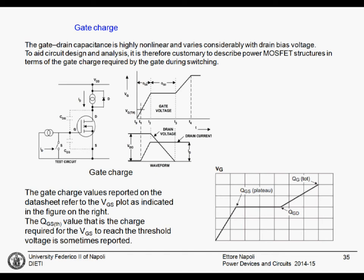This means that a significant portion of the power dissipation is the power needed to charge and discharge the input capacitances. From digital electronics, you know that charging and discharging the input capacitance of a CMOS inverter is a significant power loss. In some applications, charging and discharging the input capacitance of the MOSFET is the most important aspect. This is why the input capacitance, reverse capacitance, and output capacitance are reported on the datasheets.